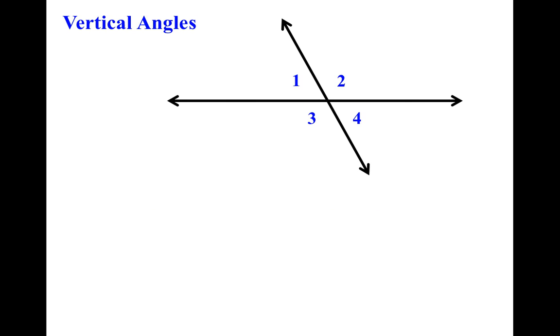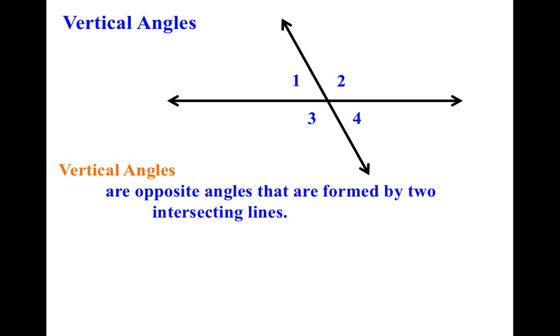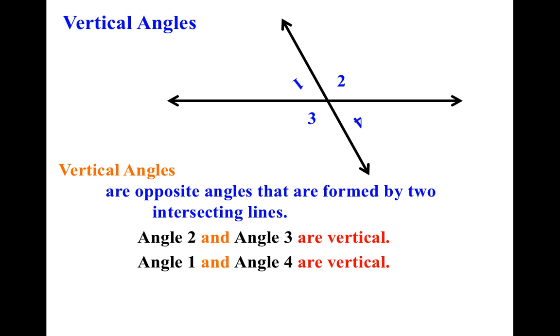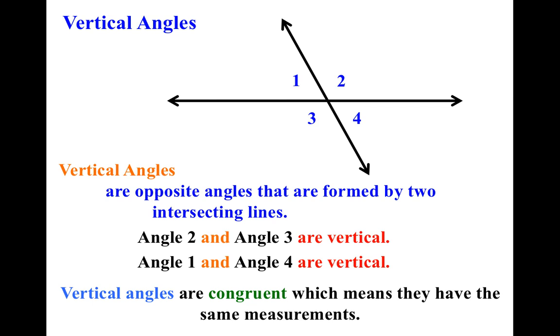All right. Vertical angles. Vertical angles are angles that are opposite each other. Notice that angles 2 and 3 are vertical angles. And angles 1 and 4 would also be vertical. Vertical angles always equal each other, and that has the word that they are congruent.